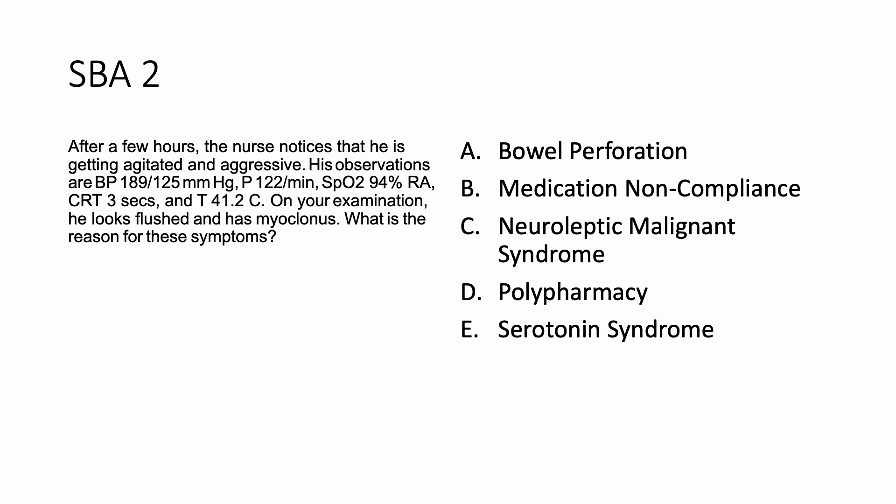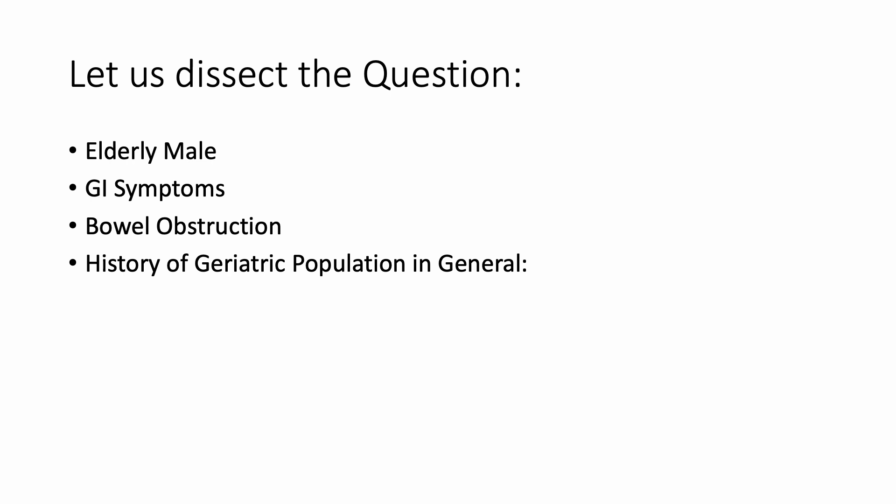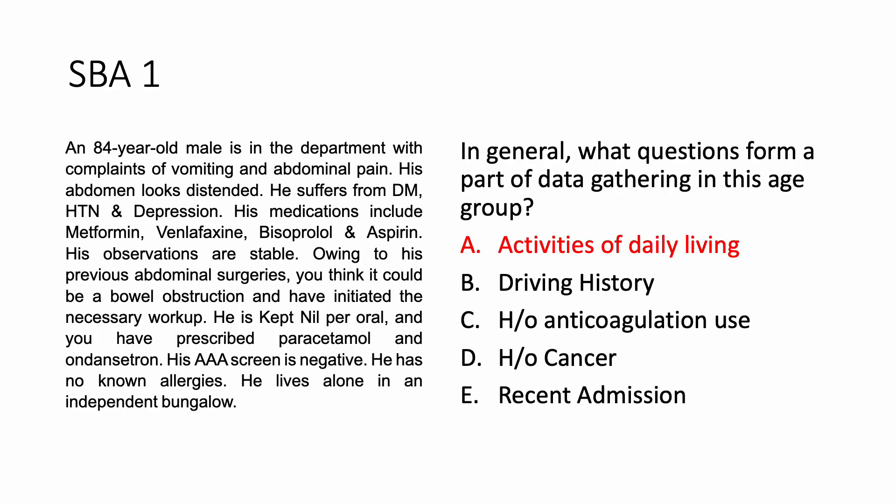Let us look at the explanation. If I dissect the question, what I see is an elderly male with GI symptoms and bowel obstruction. The question says 'in general,' so you don't need the whole scenario — you just need to know what question forms part of data gathering in this age group. For anybody above 65, you need to ask two important questions and document them: any history of recent falls — have you ever had a fall in the last one year? — and activities of daily living. These two questions form the geriatric assessment. The answer here was activities of daily living.